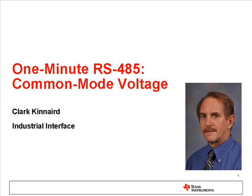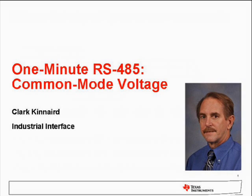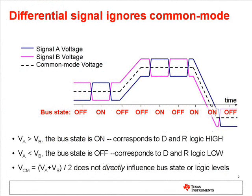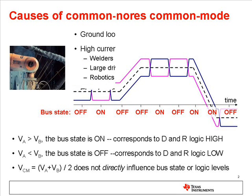I'm Clark Kinnaird from the Industrial Interface Group here at TI with a short discussion about the common mode operational range for RS-485 signaling. RS-485 uses differential signaling, so only the voltage difference between A and B carries the information. The common mode, or absolute, voltage of the wires is ignored. This gives RS-485 a high level of immunity to most kinds of electromagnetic interference.